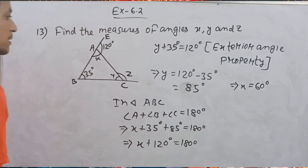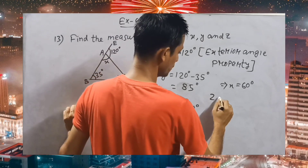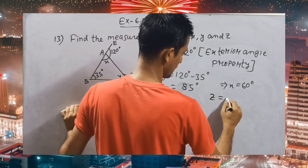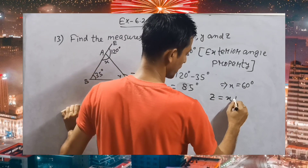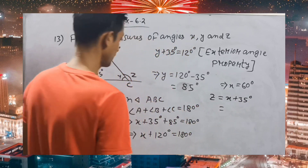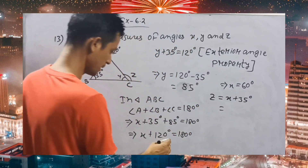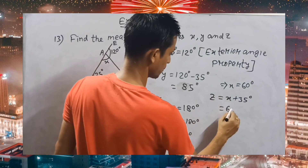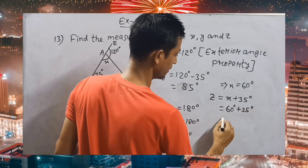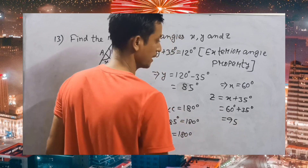So X equals 60 degrees and Y equals 85 degrees. Now what is Z? Z is equal to X plus 35 degrees, that is 60 degrees plus 35 degrees, which gives Z equals 95 degrees.